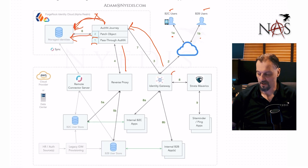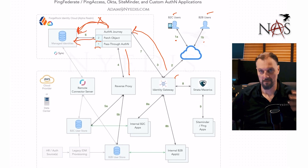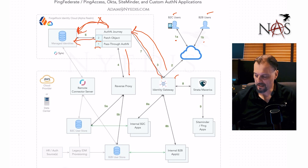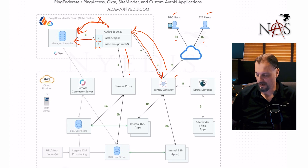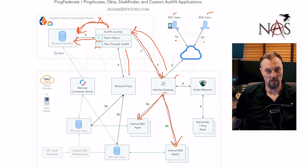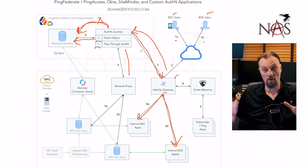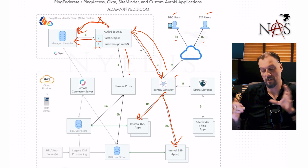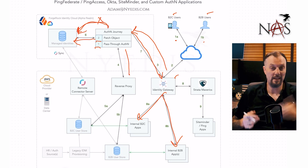Once that's done the authentication journey completes, and we go back to the Identity Gateway with the ForgeRock session. The Identity Gateway then passes the user back to whichever application they're trying to log into. That's how you can sync your passwords if you can't get them into the cloud. There is bulk import with ForgeRock Identity Cloud via CSV file, but you cannot import passwords that way — password isn't even a field to import.